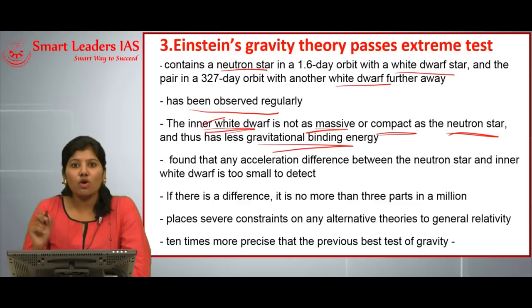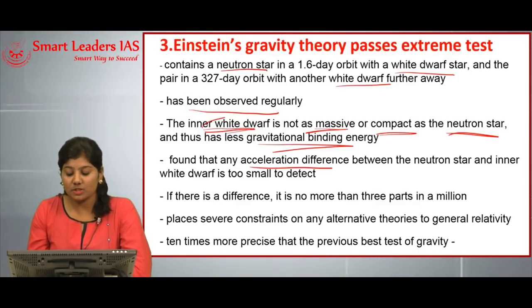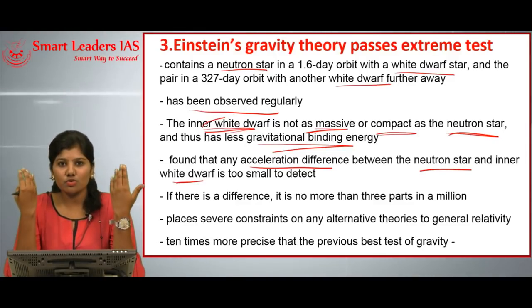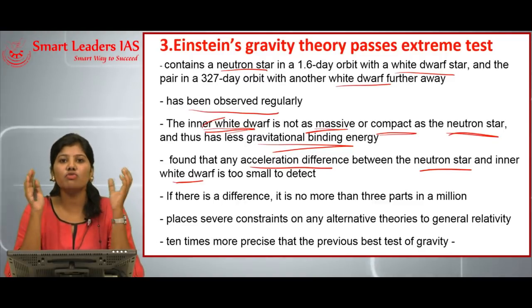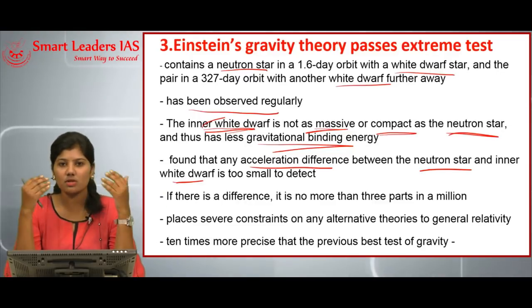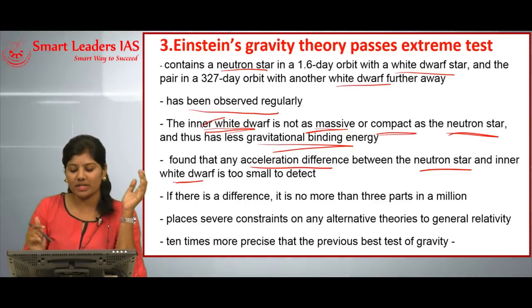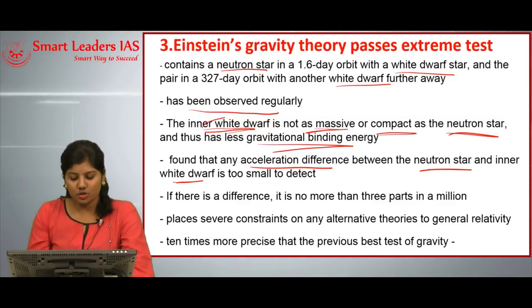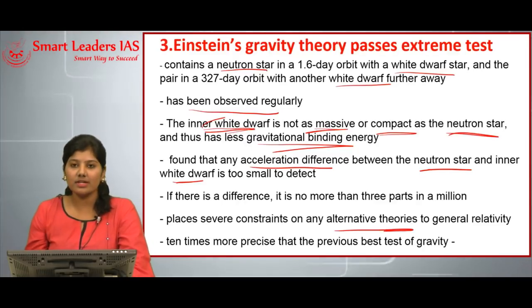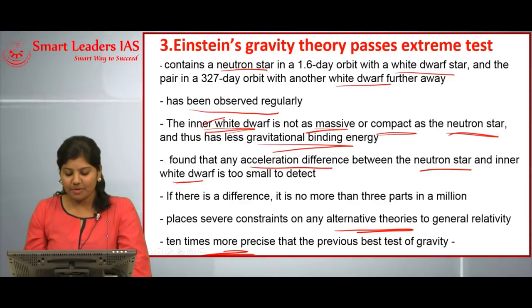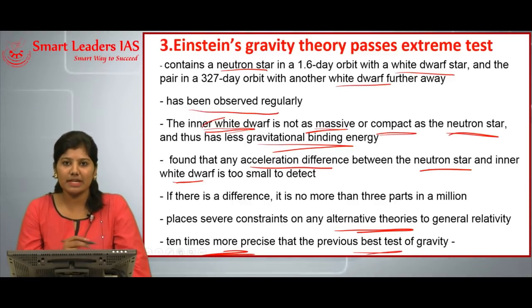When measuring Einstein's General Theory of Relativity with this triple star system, researchers found that the acceleration difference between the neutron star and the inner white dwarf is too small to detect. This means the neutron star and inner white dwarf fall at the same rate regardless of their size or composition, confirming Einstein's General Theory of Relativity. There is no support for alternative theories, and this result is 10 times more precise than the previous best test of gravity ever conducted.